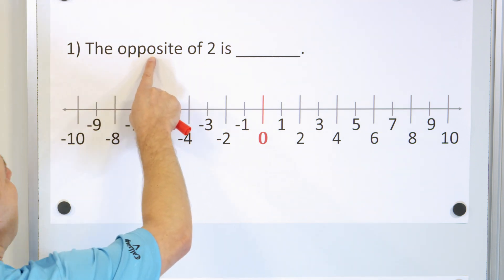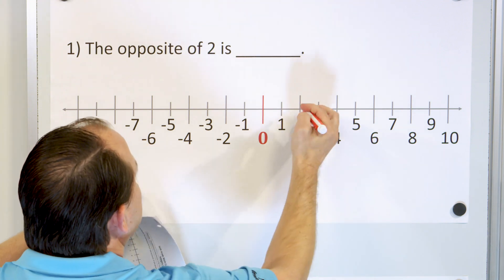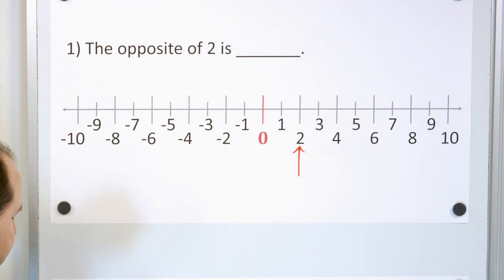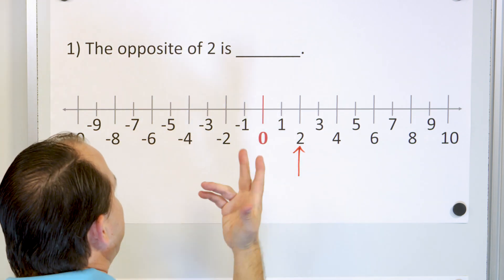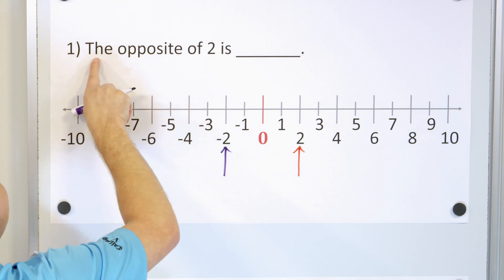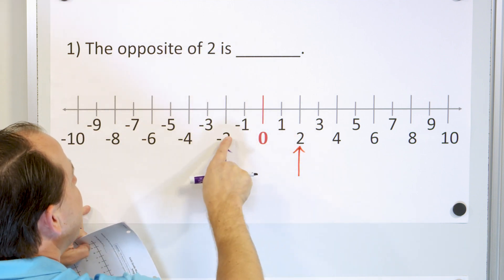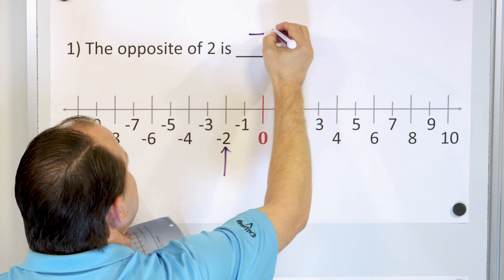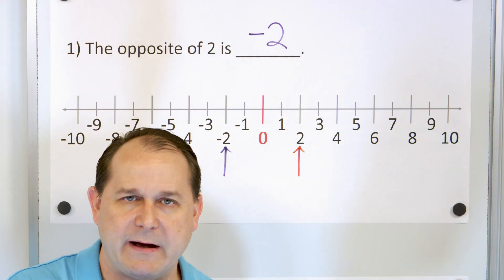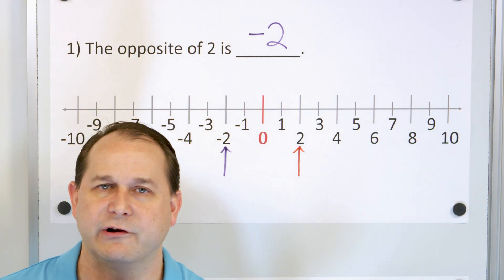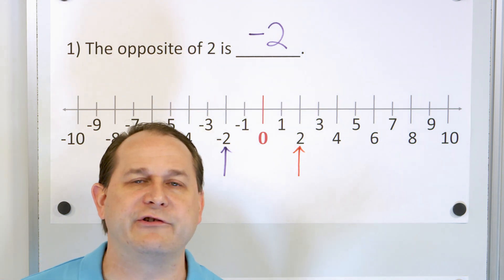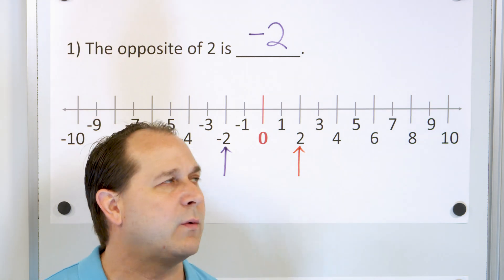So if we're going to answer the question — what is the opposite of two? First we'll find two on the number line. Two is right here, and we'll put a little arrow to show that we figured out what the number two is. What would be the opposite or the partner number of two? It would be negative two, which would be right over here. So the opposite of two is negative two. The number two is an integer because it's a whole number that happens to be positive. And negative two is also an integer because it's a negative number that happens to be a whole number — not decimals or fractions, just whole numbers, positive or negative. Those are what we call integers.